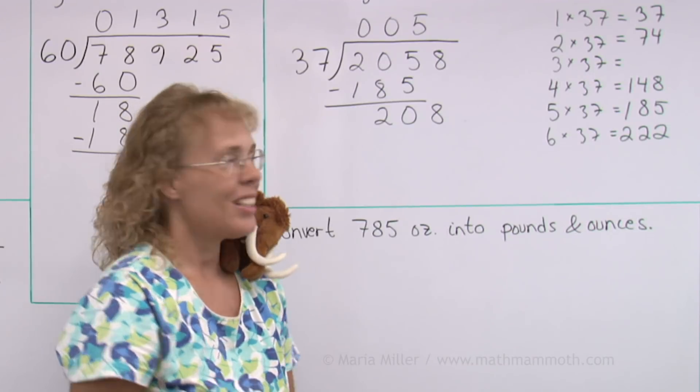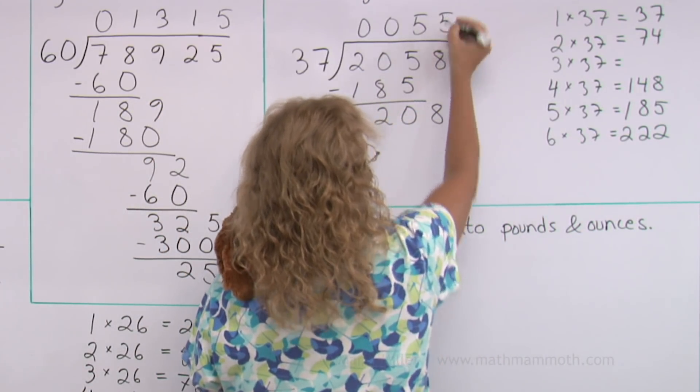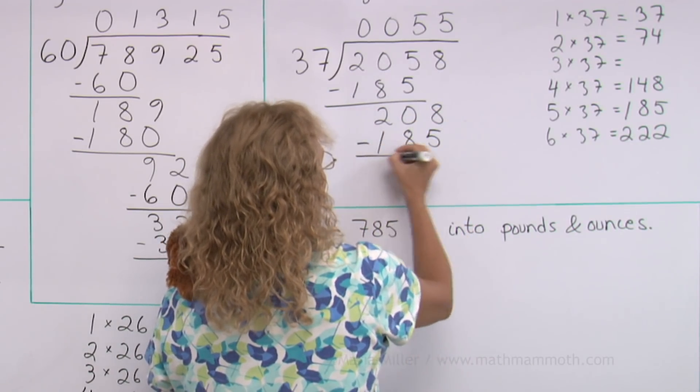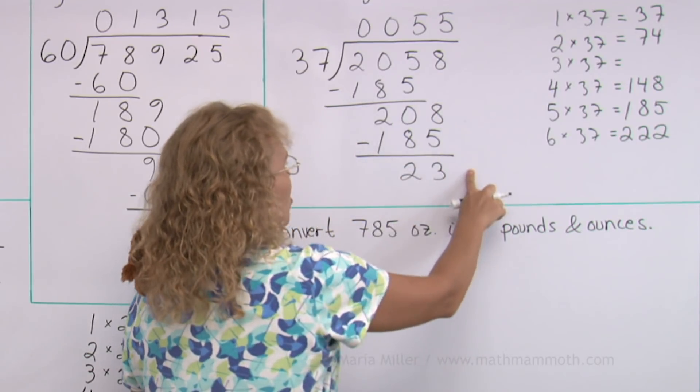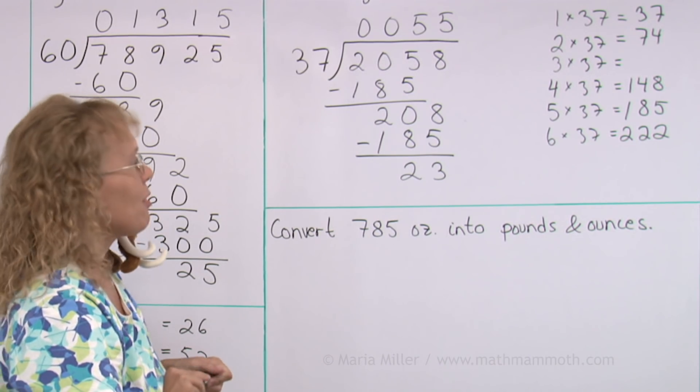208. Well, that ends up being the same. It is still 5 times. Still 185. And then we get 23. Nothing to drop down anymore, so 23 is our remainder. Answer is 55, remainder 23.